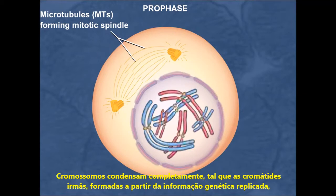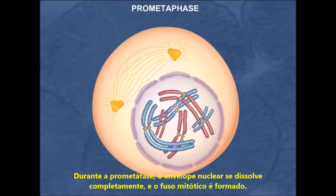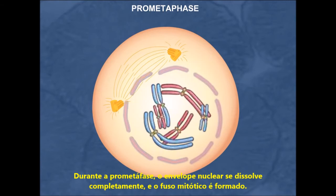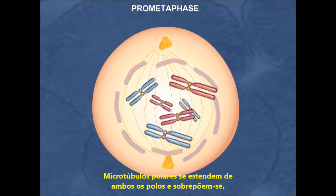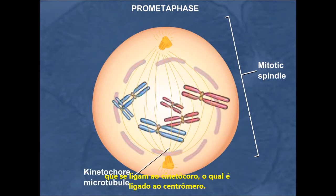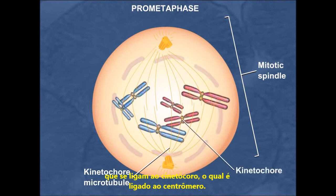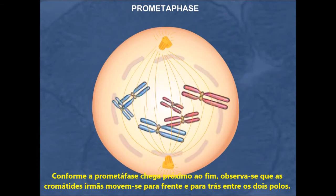Chromosomes completely condense such that sister chromatids, formed from the replicated genetic information and joined at their centromeres, are clearly visible. During prometaphase, the nuclear envelope completely breaks down and the mitotic spindle is formed. Polar microtubules extend from both poles and overlap with each other. The sister chromatids become attached to the mitotic spindle by kinetochore microtubules that attach to the kinetochores, which are bound to the centromeres. As prometaphase nears its end, the sister chromatids are observed to jerk back and forth between the two poles.